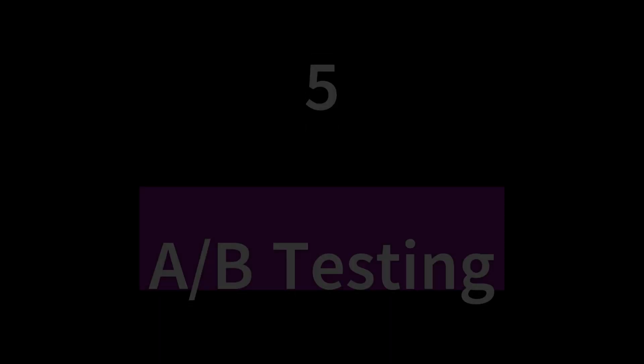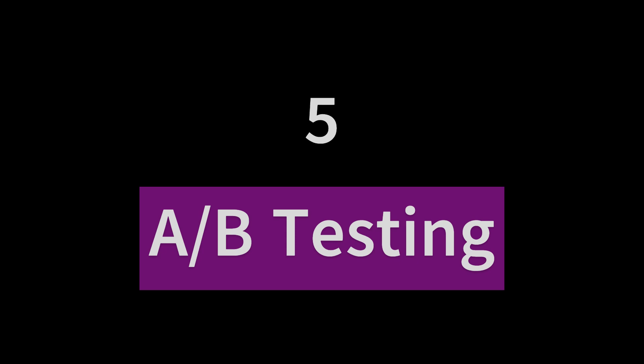Number five is A/B testing. A/B testing is a method of comparing two versions of a product to see which one performs better. It's useful for testing small changes and optimizing the product design.